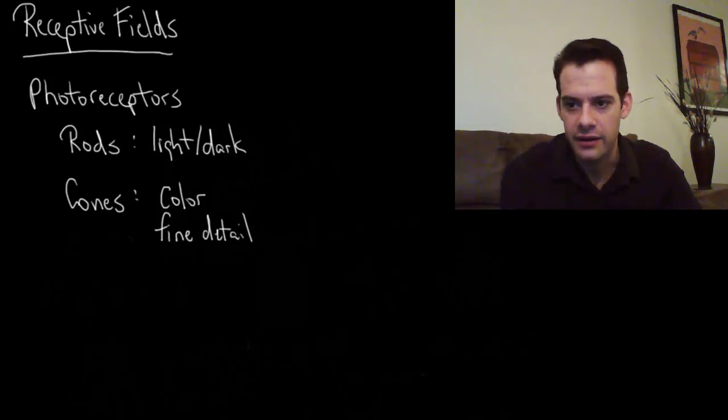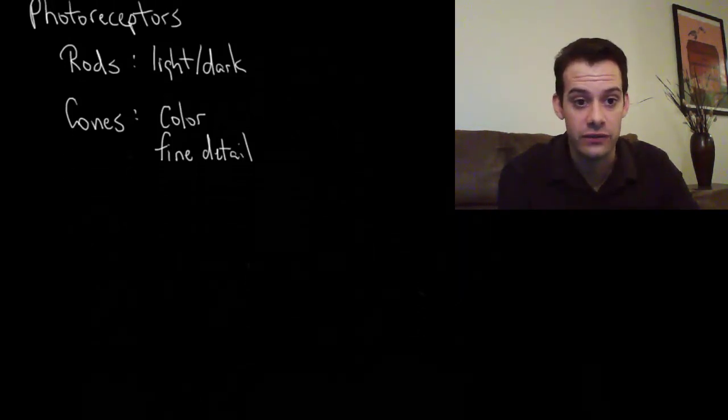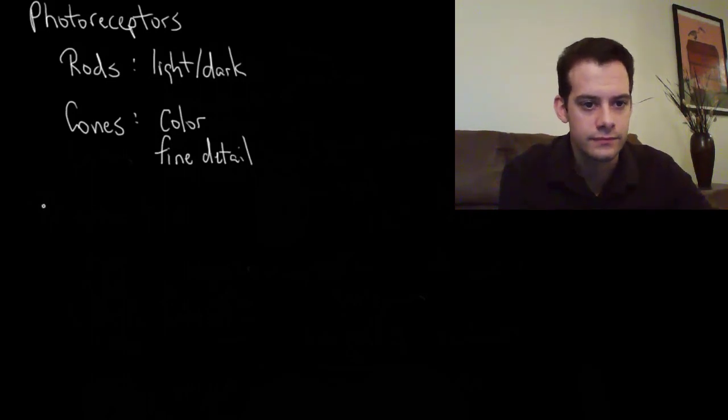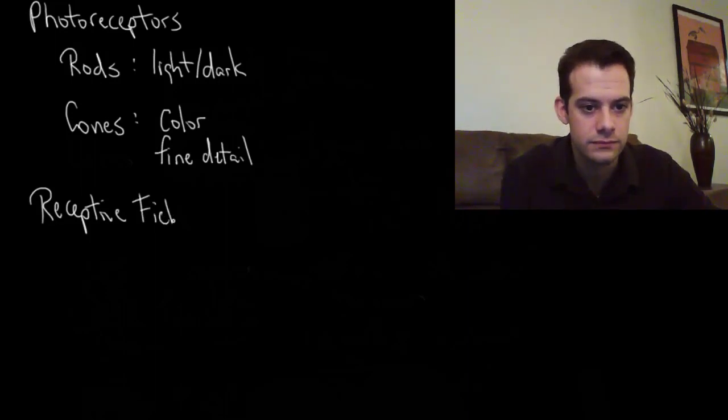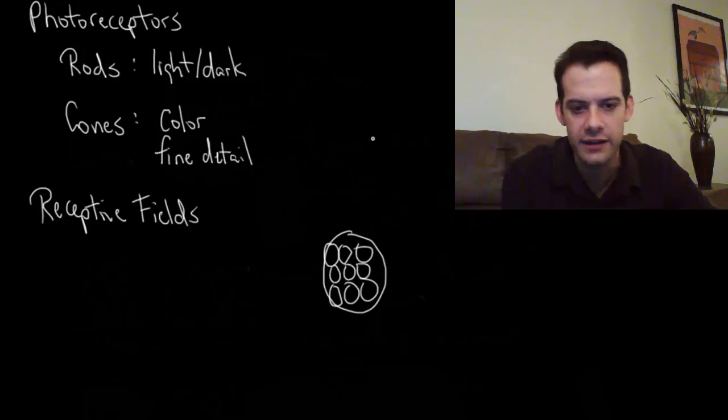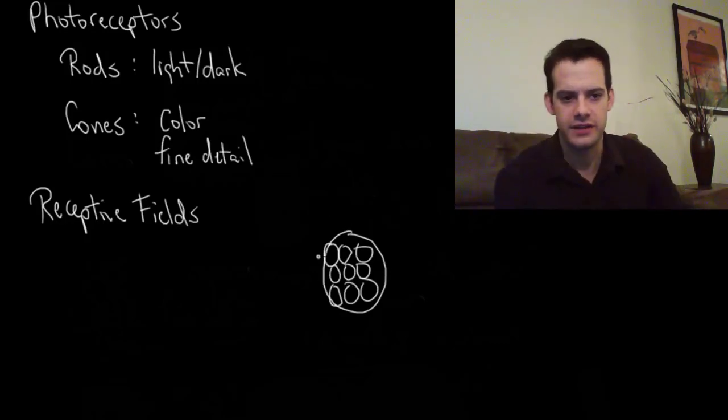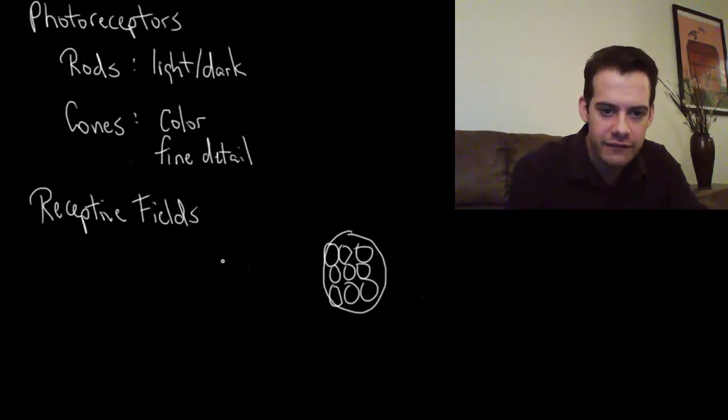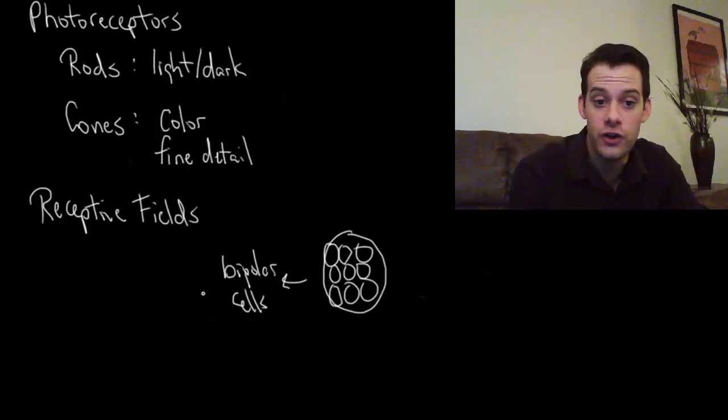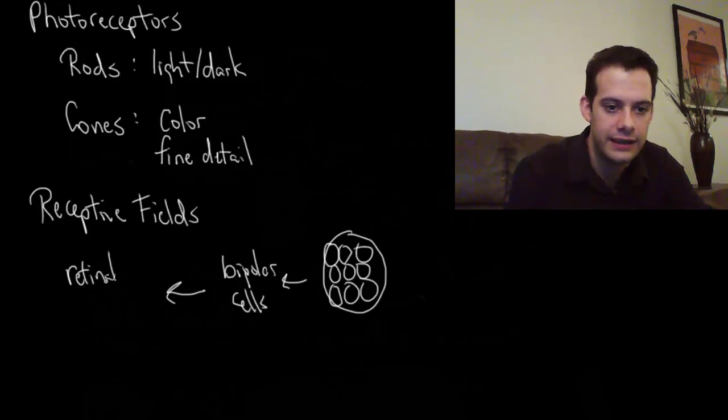The way that rods and cones are organized in the retina is that they're organized into groups. These are called receptive fields. We can imagine here's a bunch of rods, let's say, and this is obviously a bit simplified. But let's say this is our receptive field, this group of rods here. The way that it works is that the rods then stimulate a few bipolar cells. We go from a bunch of rods to a few bipolar cells and then those bipolar cells go down to a single retinal ganglion cell.